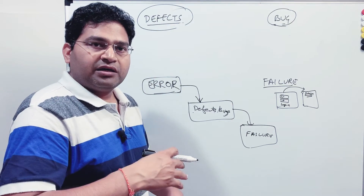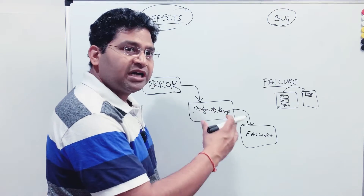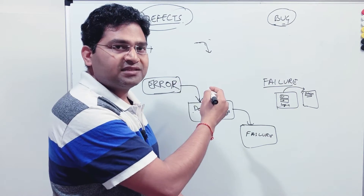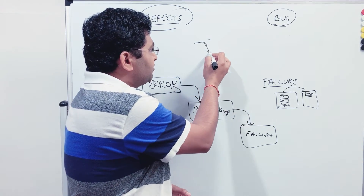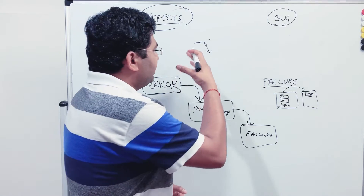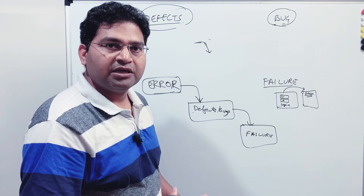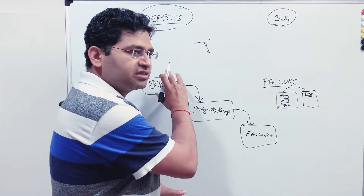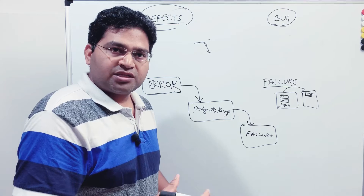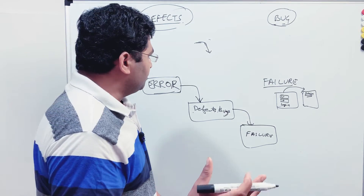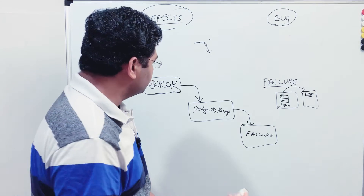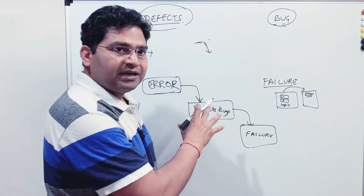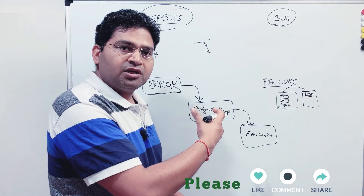There might be errors in code that don't necessarily lead to failure all the time. Patches and fixes for operating systems are made available only when an error leads to failure. Errors that are in a code flow not yet executed won't be detected unless that flow is executed. As we've seen with the testing principle, exhaustive testing is impossible, so there may be dormant errors in the application that only result in failure when a particular scenario is executed.